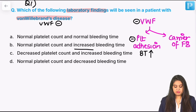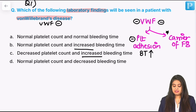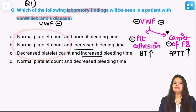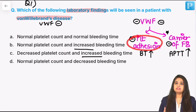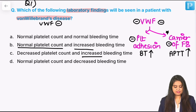Bleeding time is increased. Another function of von Willebrand factor is that it is a carrier of factor 8. If von Willebrand factor is not working well, factor 8 will also not work well. Factor 8 is part of the intrinsic pathway, which means APTT is going to be increased. However, APTT is not mentioned in any options — they have focused more on platelet count. There is a problem in platelet function, but no concern for platelet count. The platelet count turns out to be totally normal in von Willebrand disease.